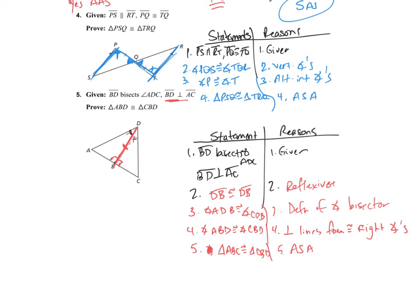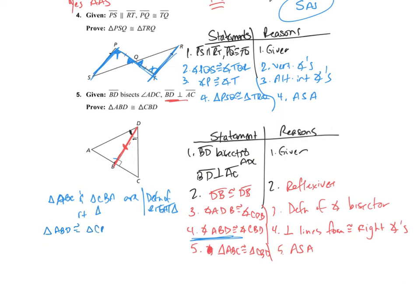Could you have done it with a right triangle proof? Yes. Since these are right angles, you could say triangle ABC and triangle CBA are right triangles by the definition of right triangle. Then you would conclude triangle ABD is congruent to triangle CBD — and since you have the leg and that acute angle, it would be leg-acute angle.